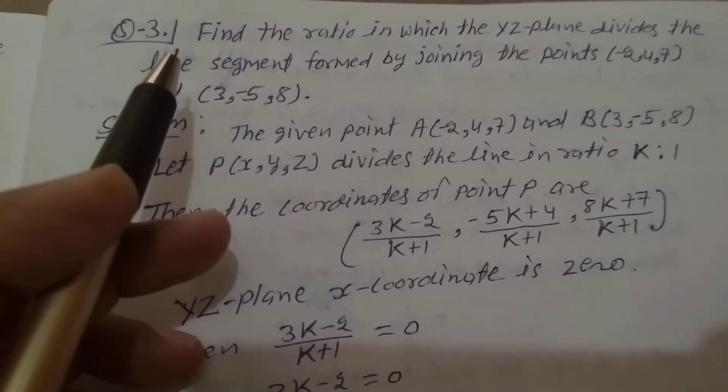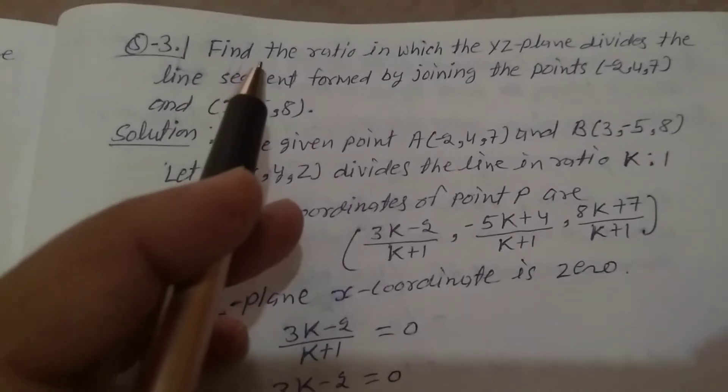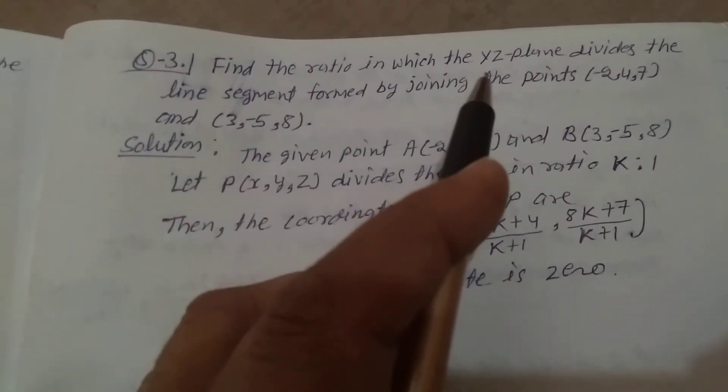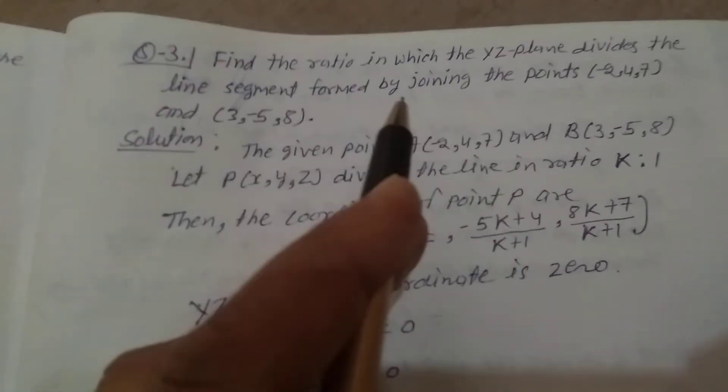Explain question number 3, exercise 12.3 class 11th: Find the ratio in which the YZ plane divides the line segment formed by joining the points.